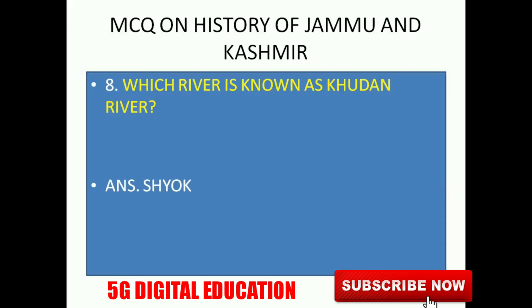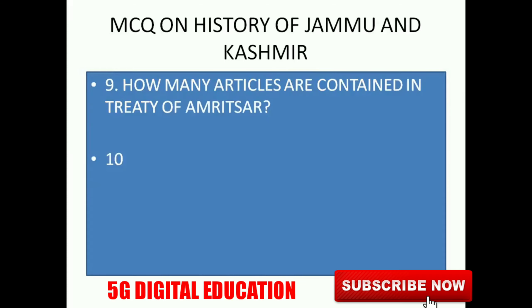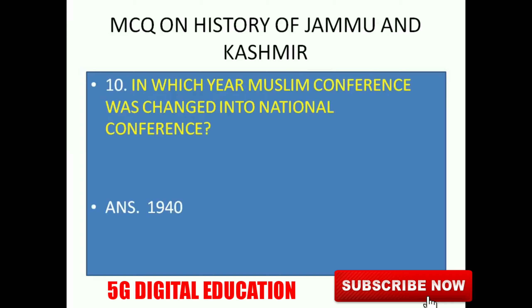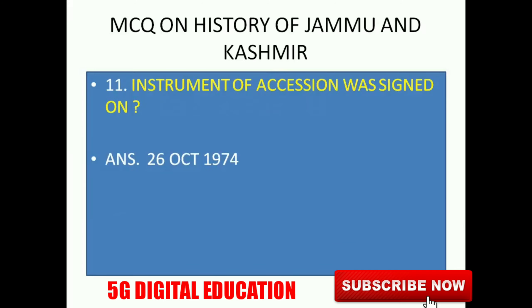Next: Which river is also known as the Khudan River? The Shyok River is known as the Khudan River. Next: How many articles are contained in the Treaty of Amritsar? It contains 10 articles. Next: In which year was the Muslim Conference changed into the National Conference? It was changed in 1940.